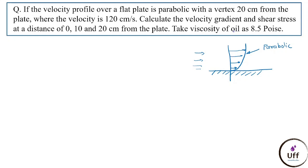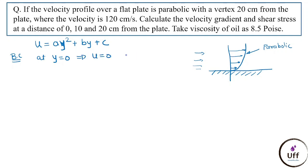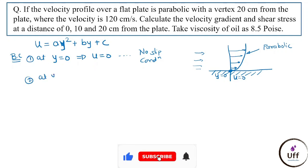The velocity profile equation is parabolic, so assume u = ay² + by + c. We need boundary conditions to find coefficients a, b, c. First condition (no-slip): at y = 0, u = 0. Second condition (given): at y = 20 cm, u = 120 cm/s.